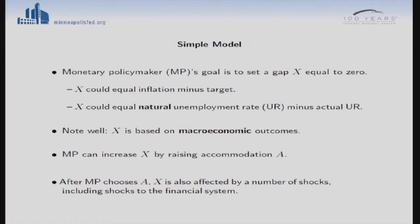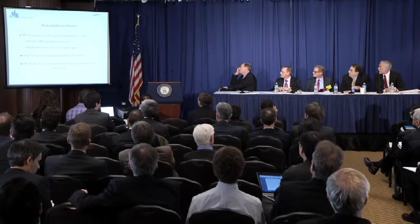We're going to have to make linkages between that and what's going to happen in the macro economy. The monetary policymaker has an ability to alter accommodation — I'll treat that very abstractly by changing this variable A. X, the gap, is increasing in A. One issue is that there's a lag: after you choose your level of accommodation, the gap could be affected by a number of shocks that are outside your control, including shocks to the financial system. The loss for the central banker is traditionally given by the square of the gap.